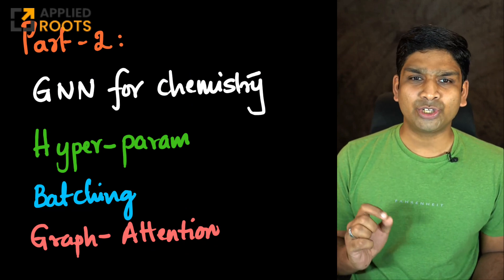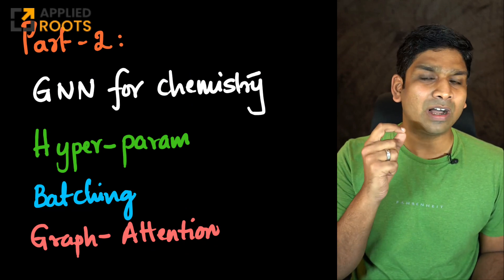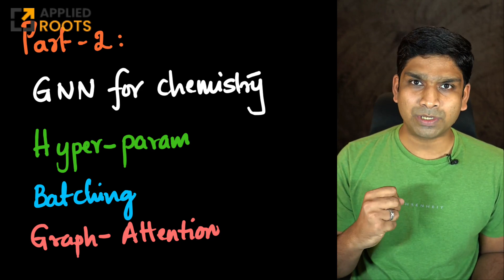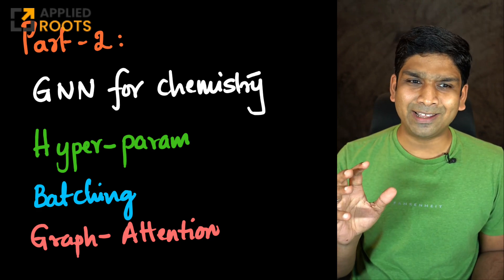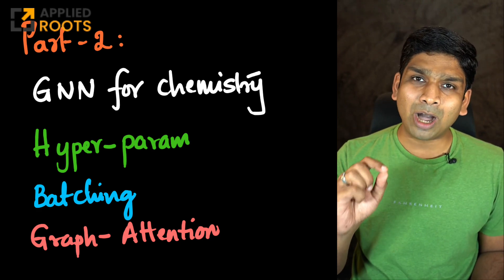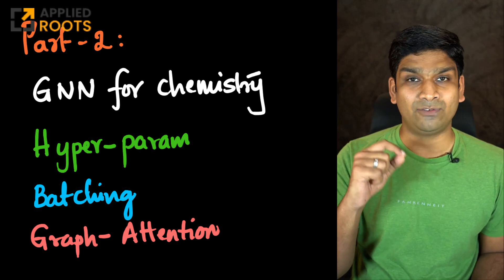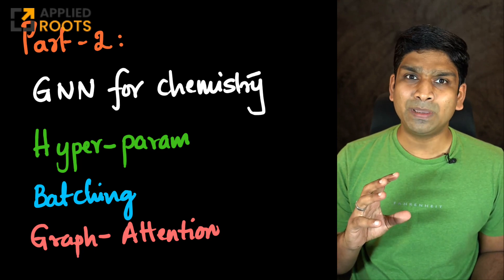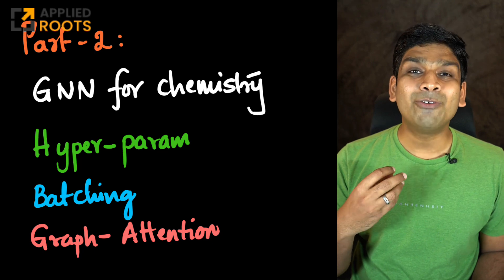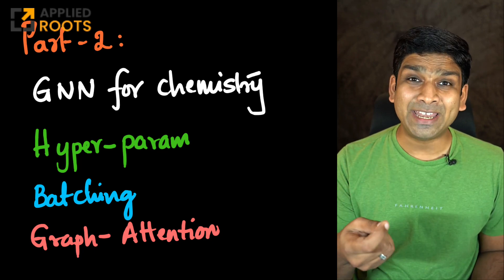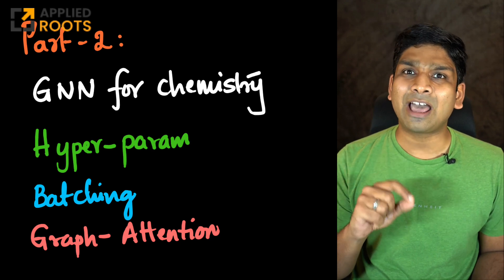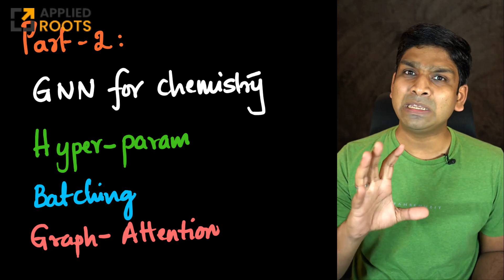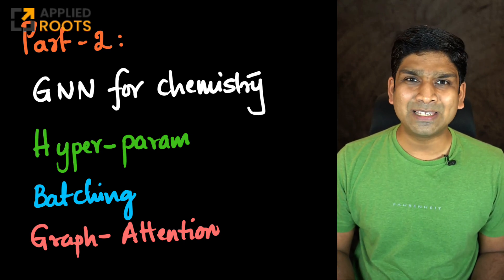In part 2 of this live session, we will understand a real-world example of how a graph neural network can be used for a problem in chemistry on some molecular compounds. We'll take a real-world problem, design a simple architecture, and understand how hyperparameters typically impact the graph neural network. Then we'll discuss miscellaneous topics like how to sample from a graph, how to create batching for batch-based training of a graph neural network, and we'll also touch upon graph attention mechanisms. If time permits we'll cover more topics, but these are the minimum set of topics for part 2.